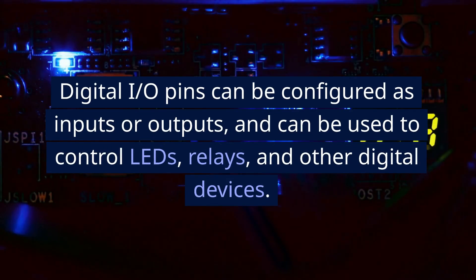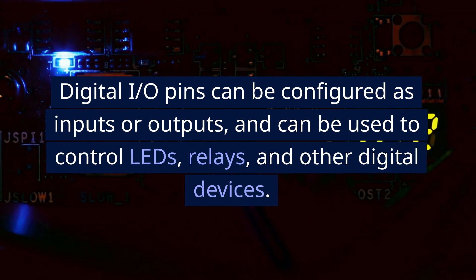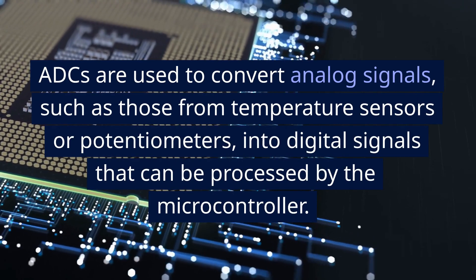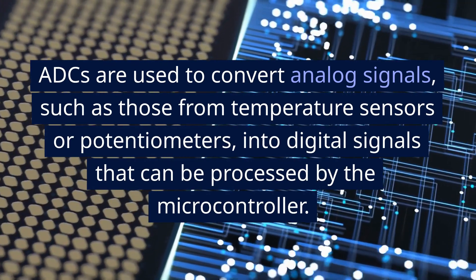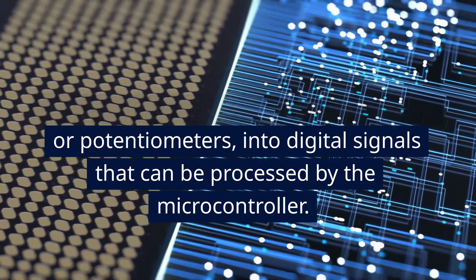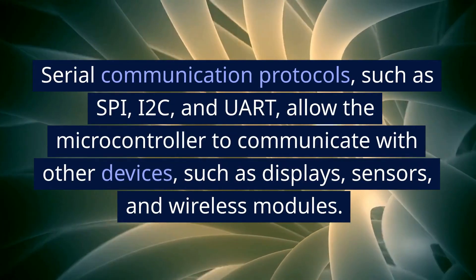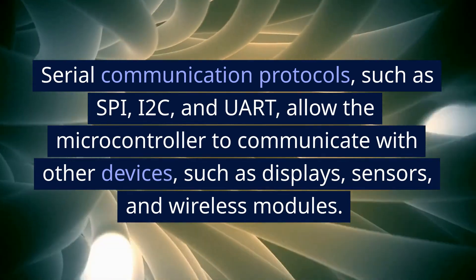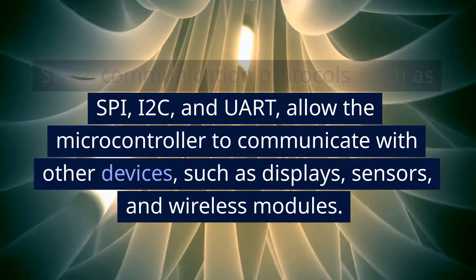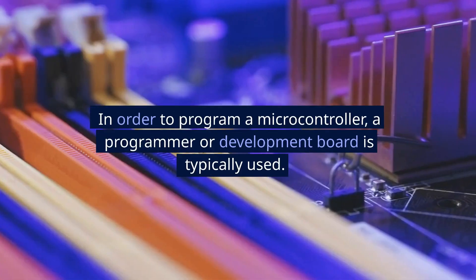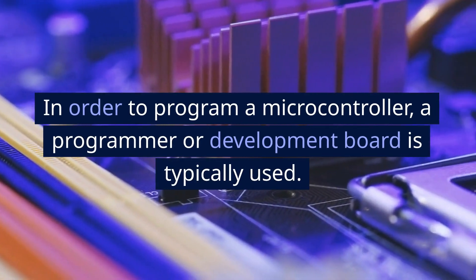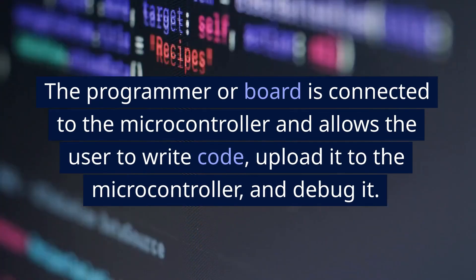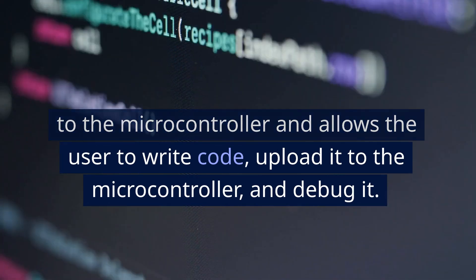Digital I/O pins can be configured as inputs or outputs, and can be used to control LEDs, relays, and other digital devices. ADCs are used to convert analog signals, such as those from temperature sensors or potentiometers, into digital signals that can be processed by the microcontroller. Serial communication protocols, such as SPI, I2C, and UART, allow the microcontroller to communicate with other devices, such as displays, sensors, and wireless modules.